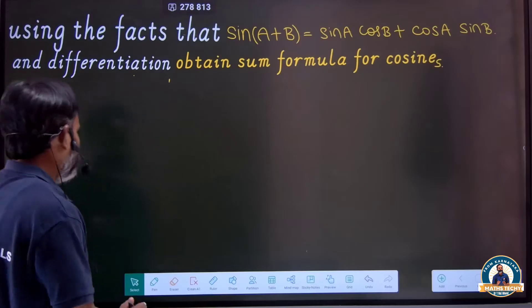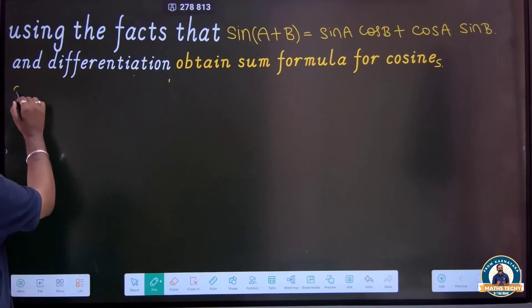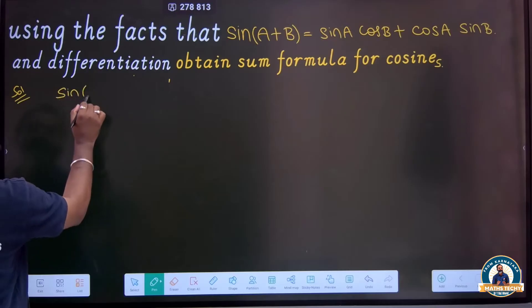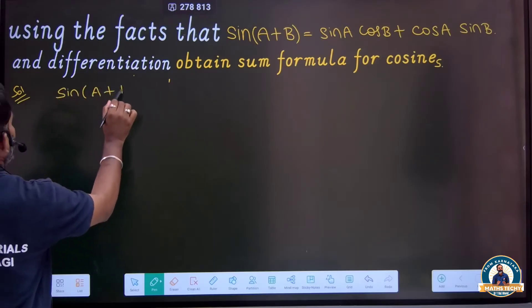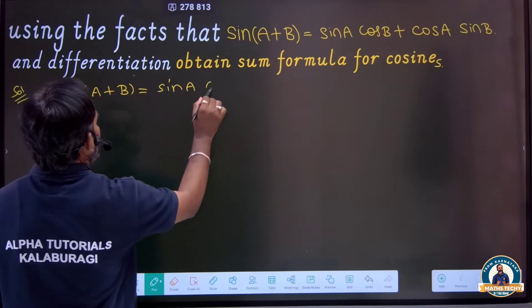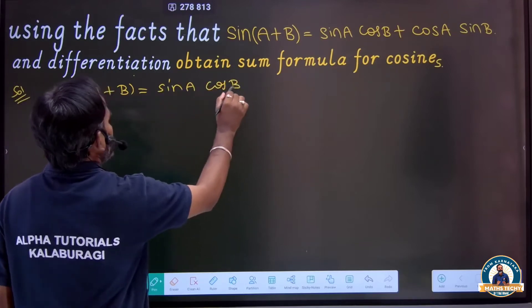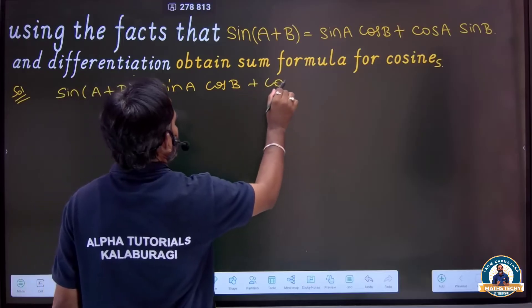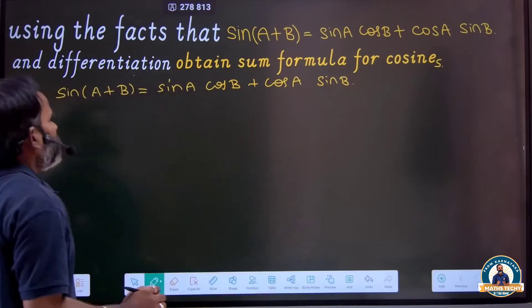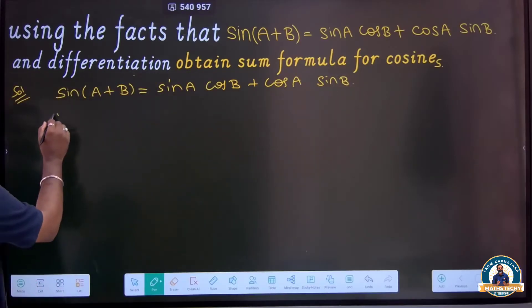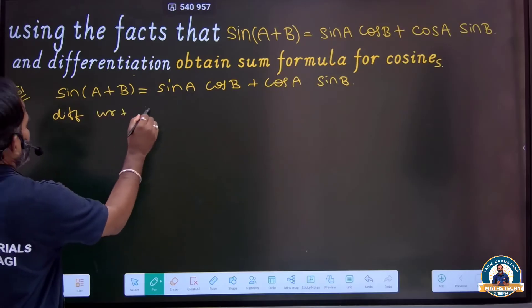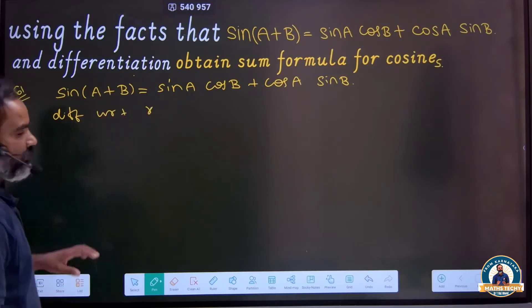So, what is sin(a+b)? sin(a+b) equals sin a cos b plus cos a sin b. Now let's do the differentiation of this with respect to x.